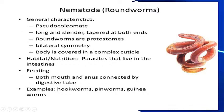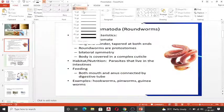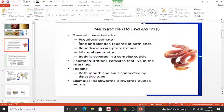Looking at the general characteristic features of nematodes: the body design is at the tissue level of organization. They are pseudocoelomates — 'pseudo' means false and 'coelom' means body cavity — so they have a type of false body cavity.